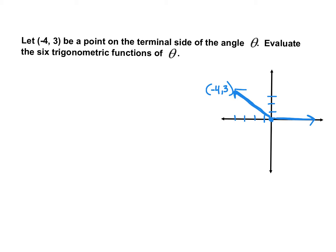When we're going to find the six trigonometric functions, we're going to create a right triangle with this angle that also uses the x-axis. This right triangle is always going to connect to the x-axis, wherever it is in relation to that angle. In this case, we draw a right triangle connecting down to the x-axis. We can label it: x is negative 4, y is 3, and we need to find the hypotenuse length.